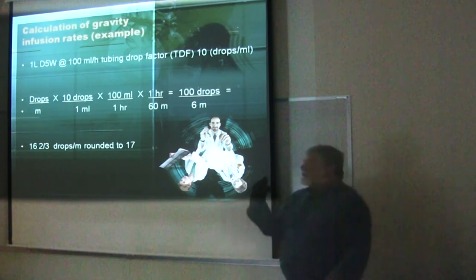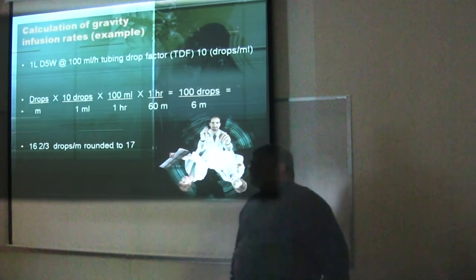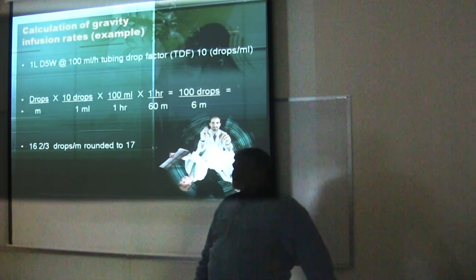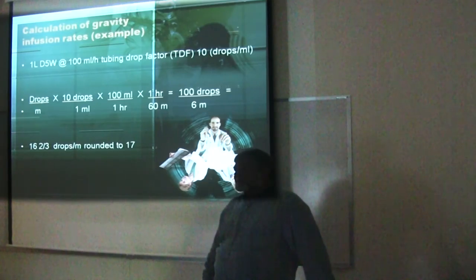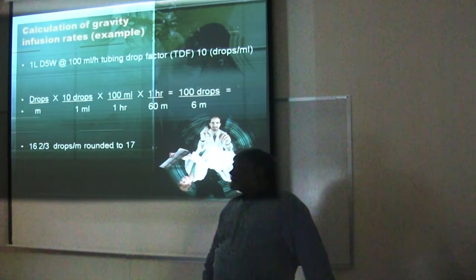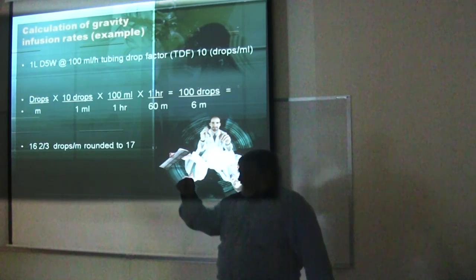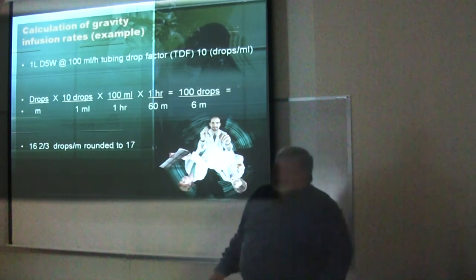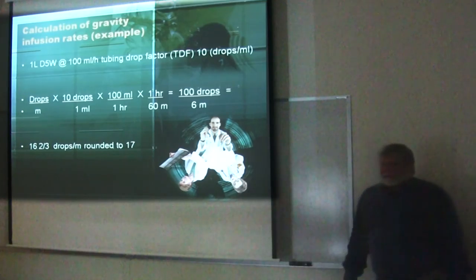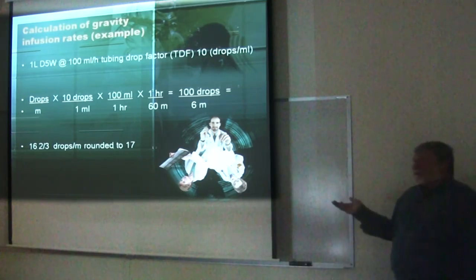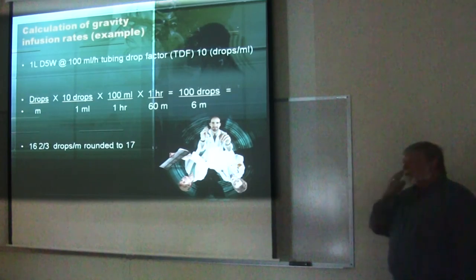What's the fastest you can count drops? Maybe up to 120 per minute — after that your accuracy really falls off because it just starts running together. Really, once you get over 50 or 60 drops per minute, that's a fairly fast drip, at least on a manual setup.